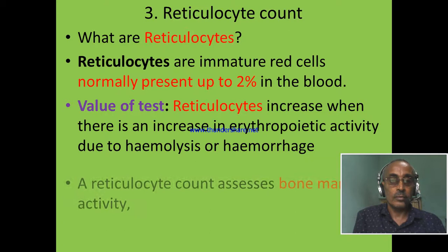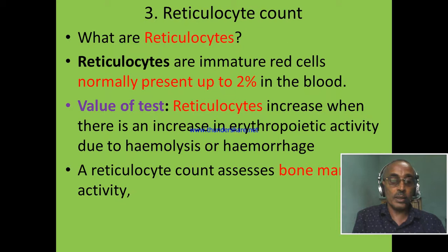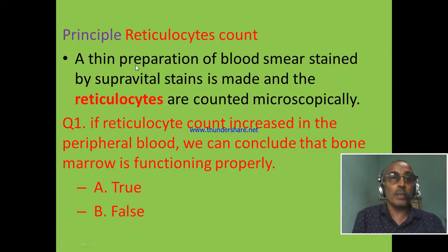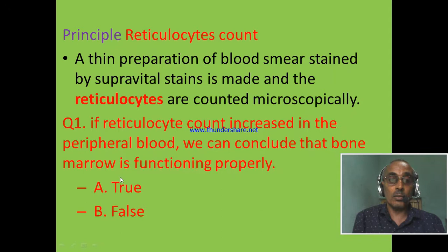Reticulocyte count is also used to assess bone marrow activity. Principle of reticulocyte count: Preparation of a blood smear stained by supravital stain is made, and the reticulocytes are counted microscopically and reported in percentage. Summary question: If reticulocyte count increases in the peripheral blood after hemorrhage and hemolysis, we can conclude that bone marrow is functioning properly. This is a true or false question.